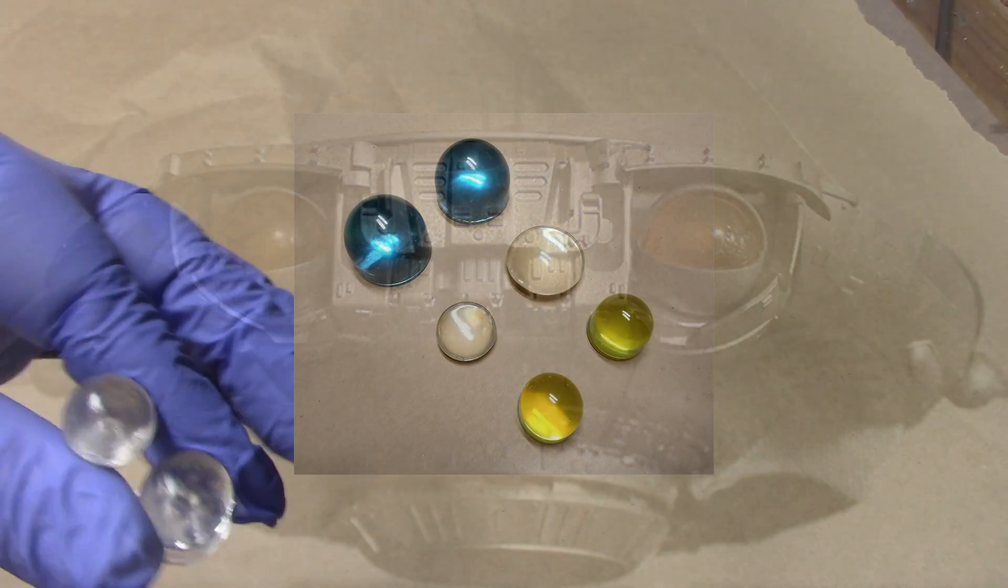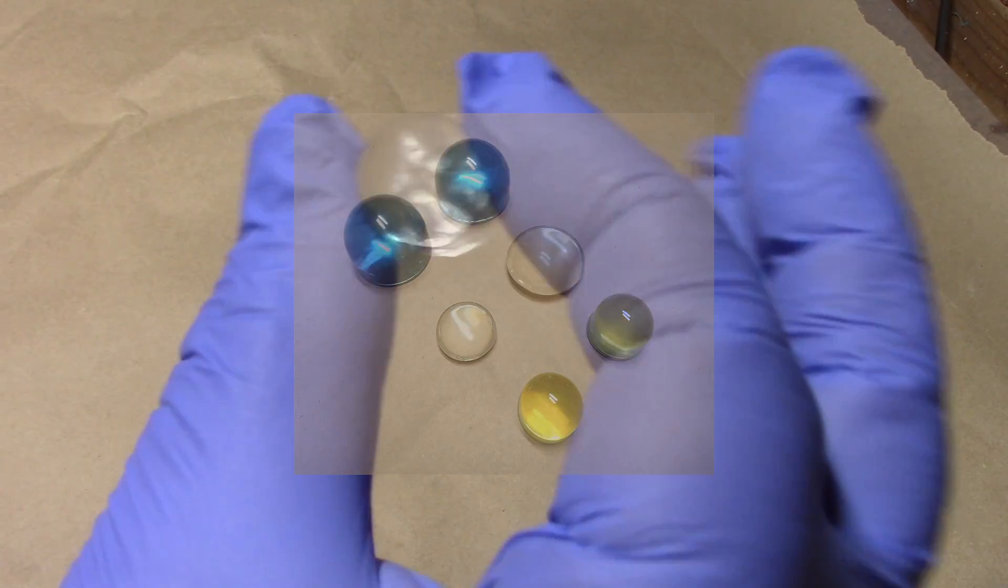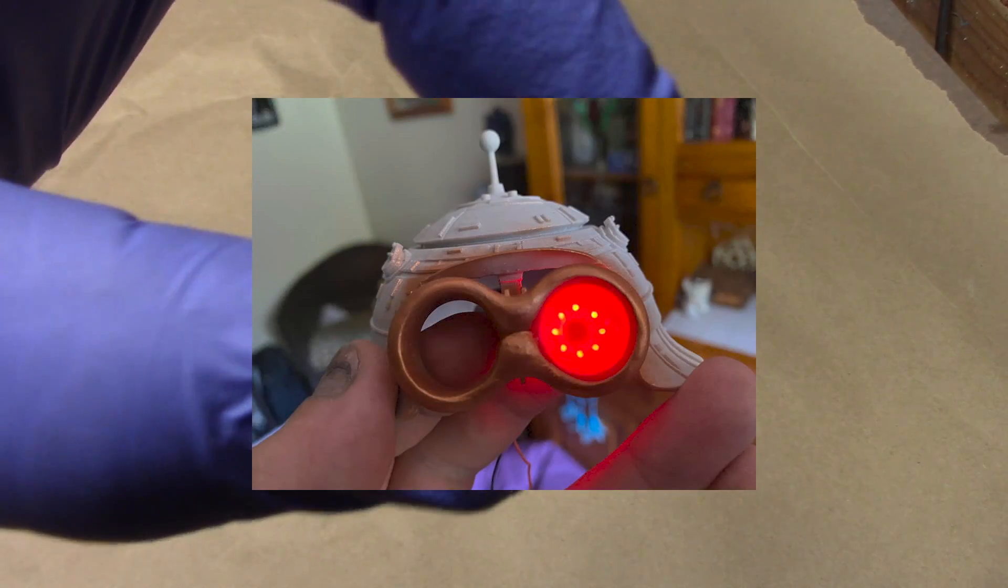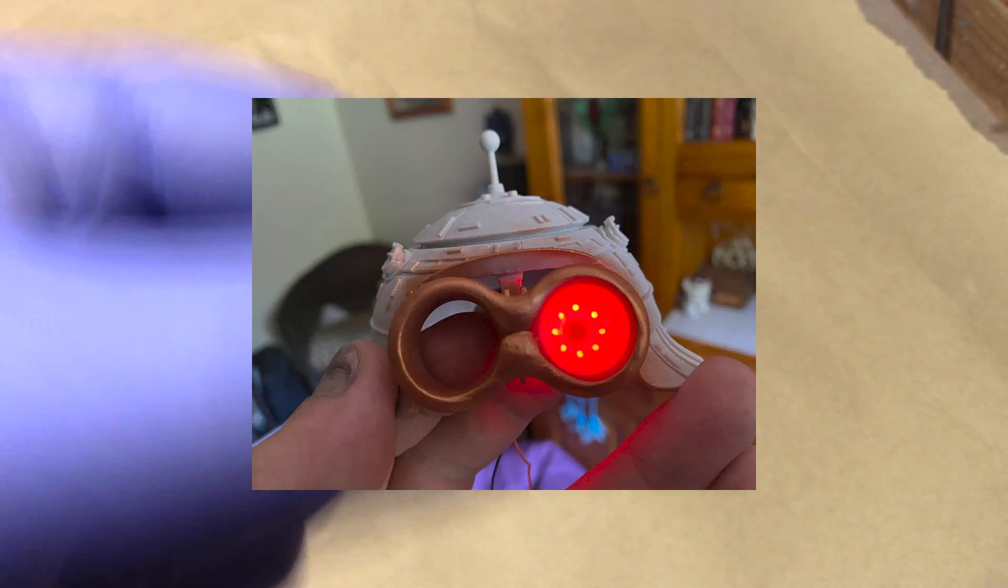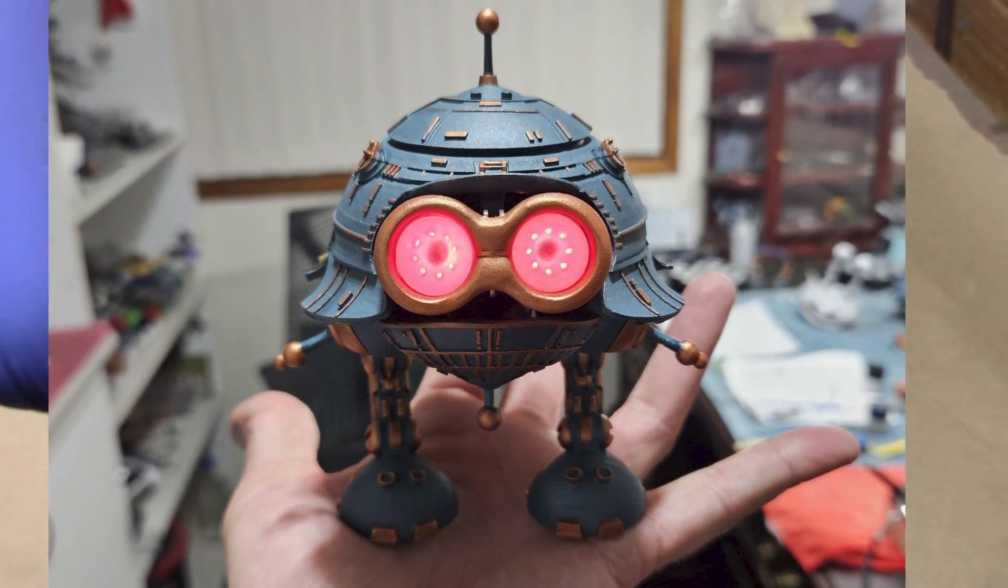You could do canopies this way, helmet lenses, anything you want. I mean, look at this. The transmission. There's an array of holes in this lens, and the transmission of those holes. Beautiful pieces.